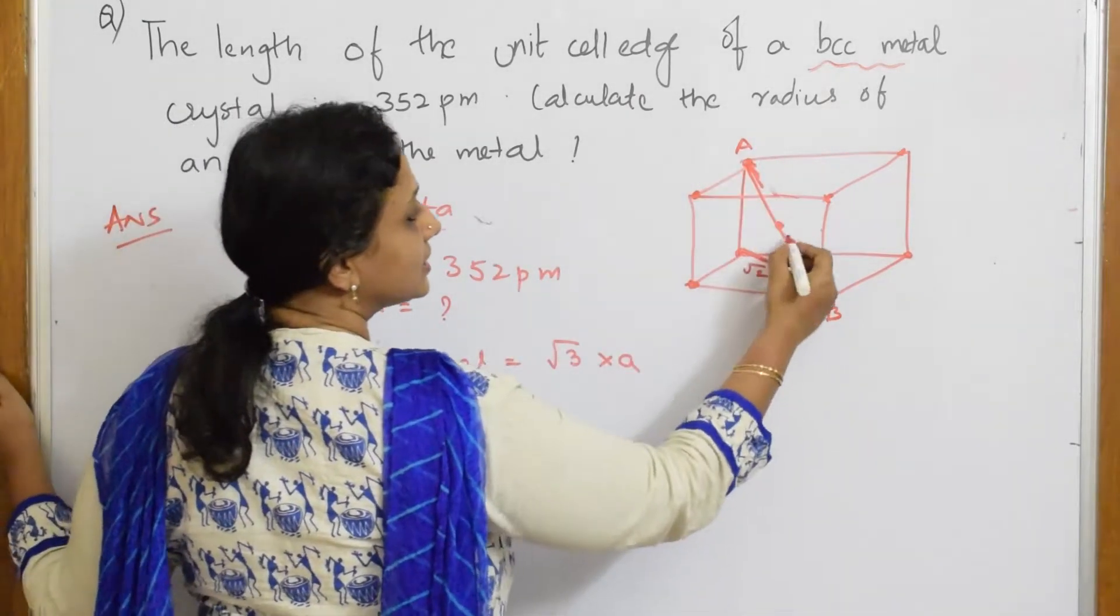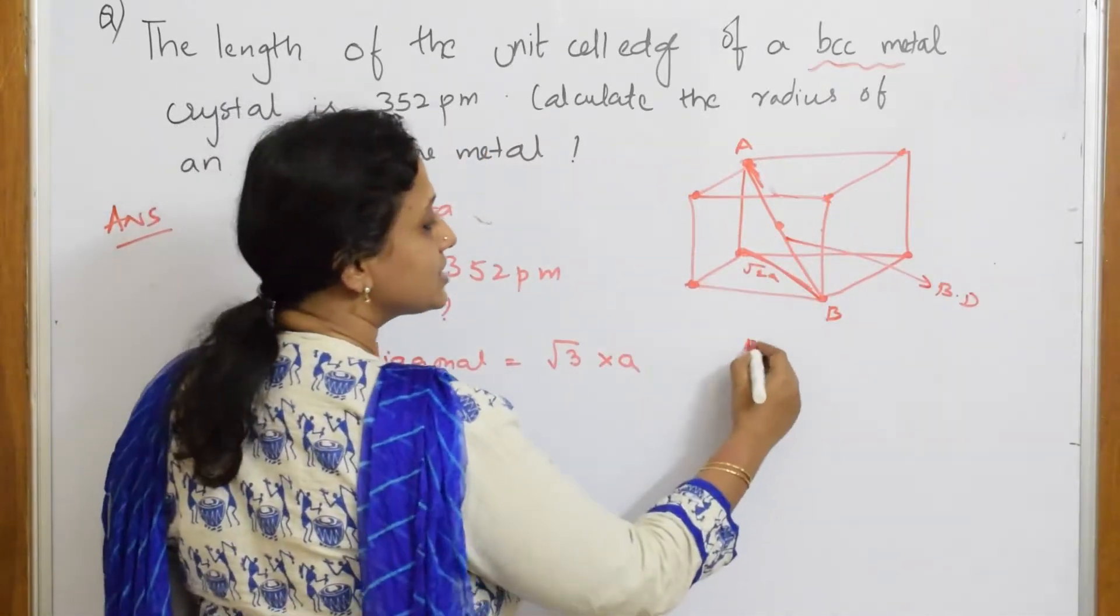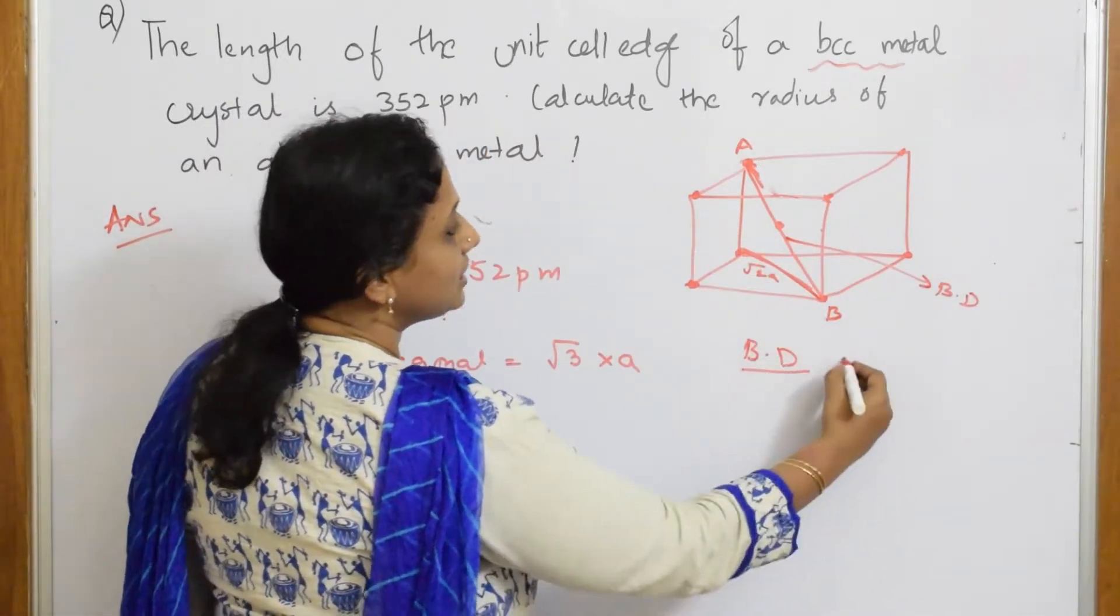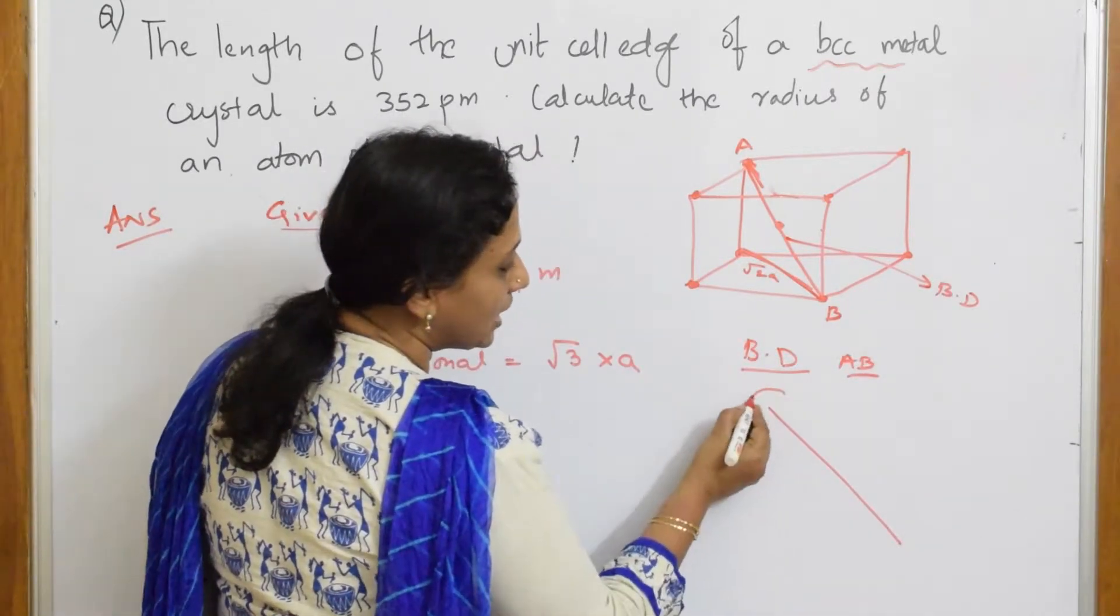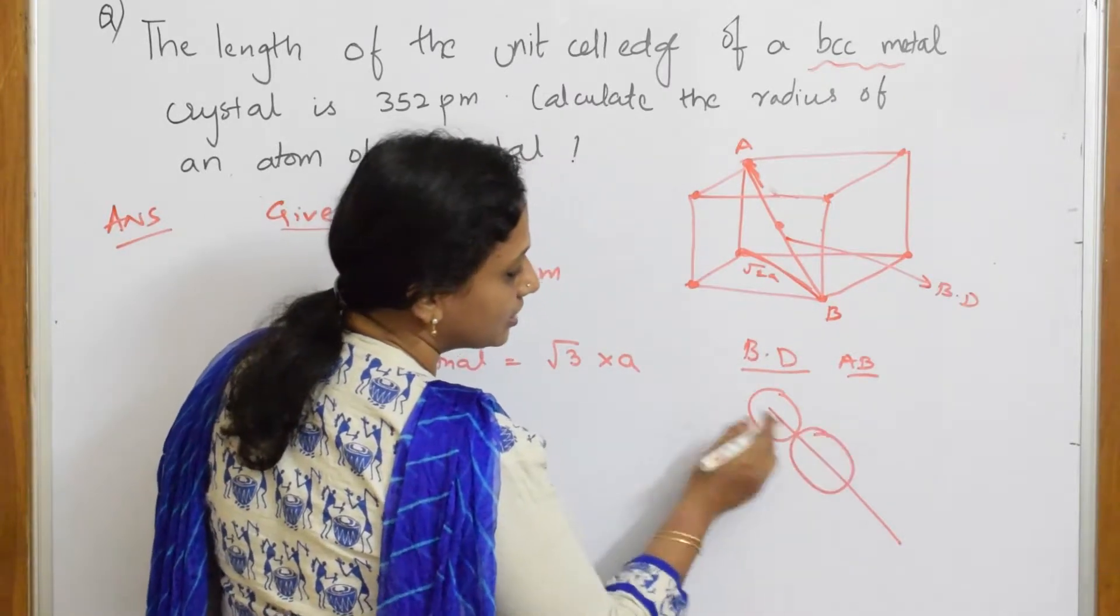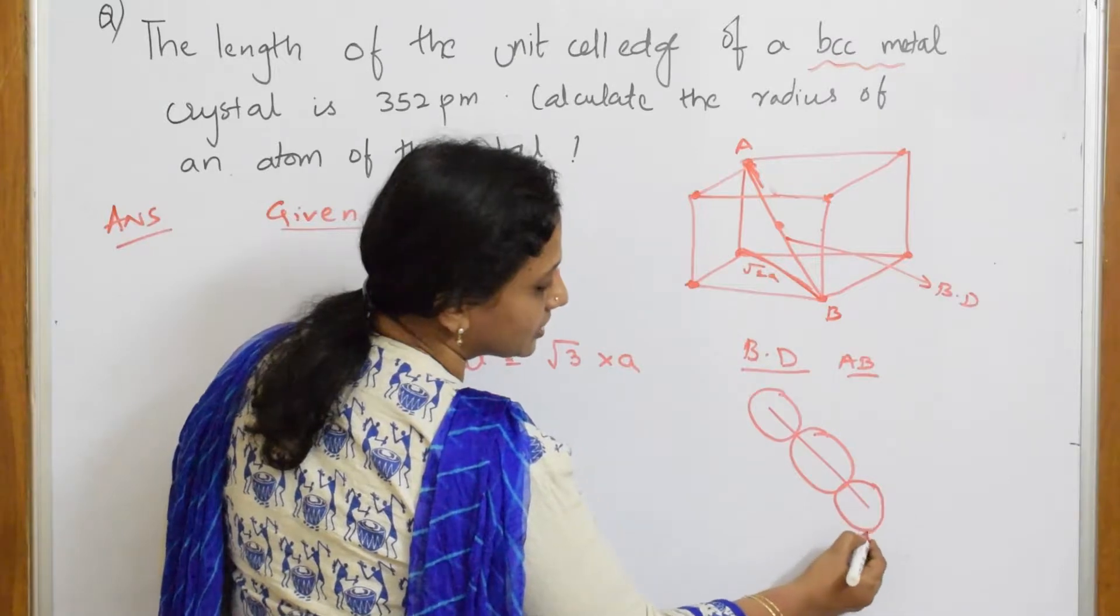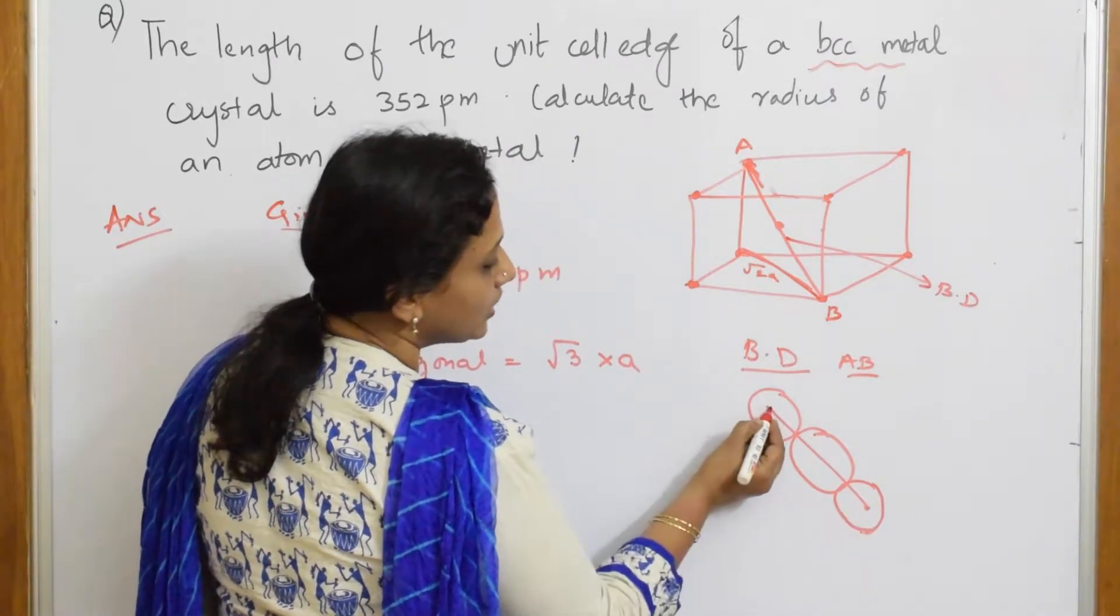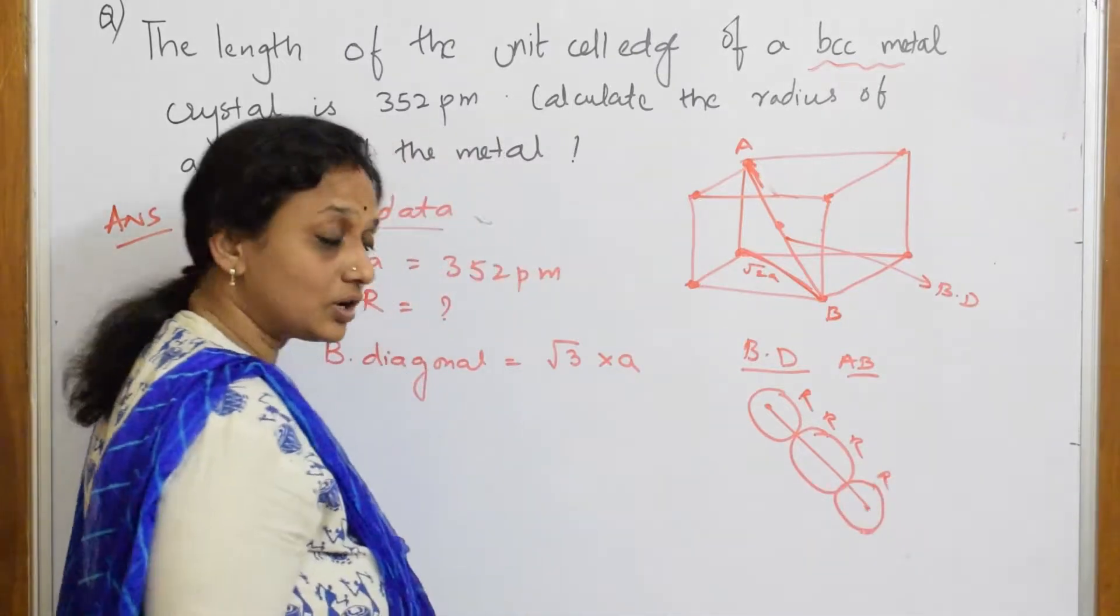Now this body diagonal AB looks like this: you have one atom here, one more here, and one more there. So what do I have? R, R, R, and R. What is the body diagonal? It is equal to 4R.